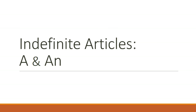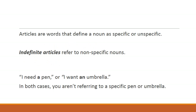In articles we have two categories. One is the definite article and the other is the indefinite article. In indefinite articles we have A and AN. And today we are going to learn the function of the indefinite articles. So what do these articles do? These articles define a noun whether they are specific or unspecific — whether we are talking about a specific thing or a particular thing.